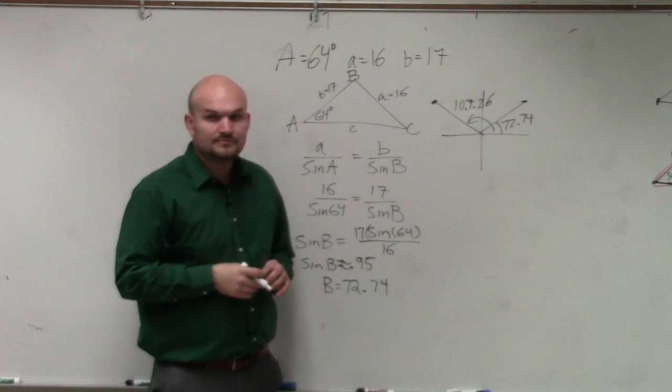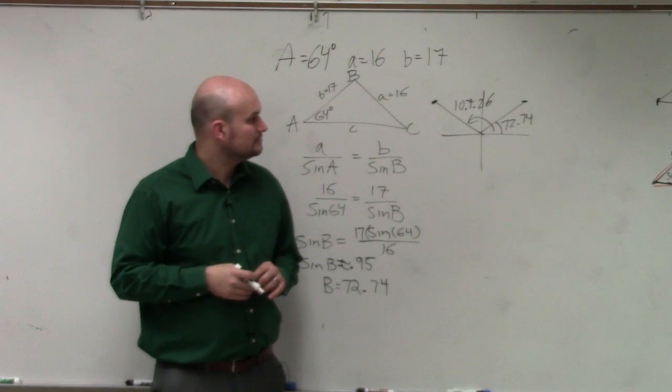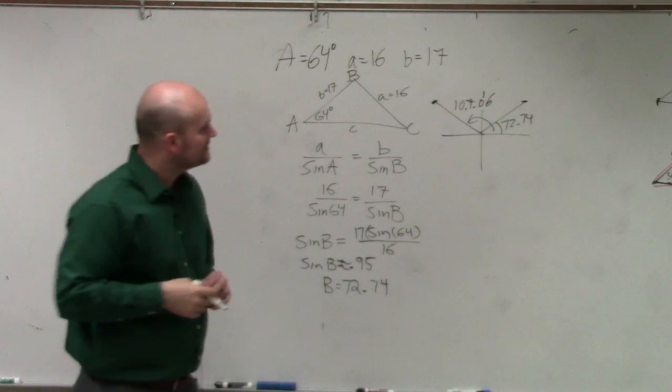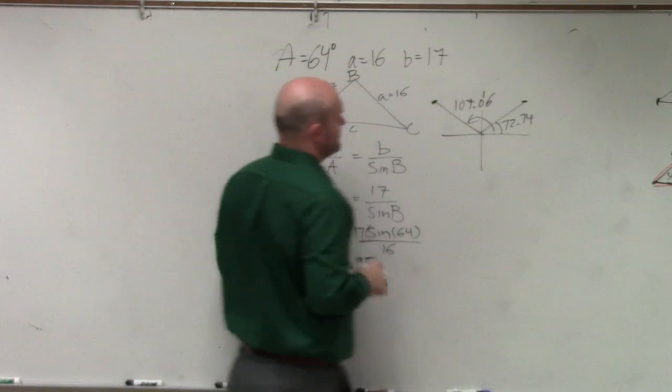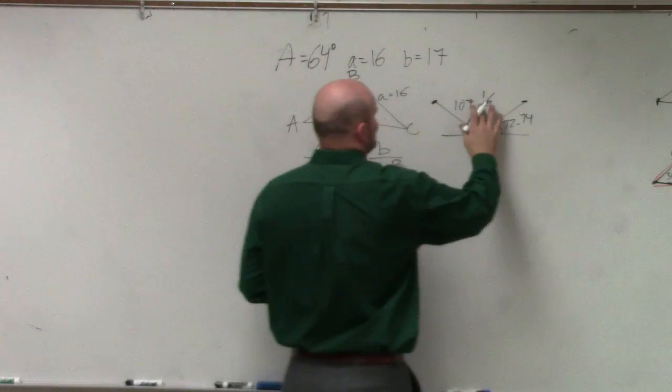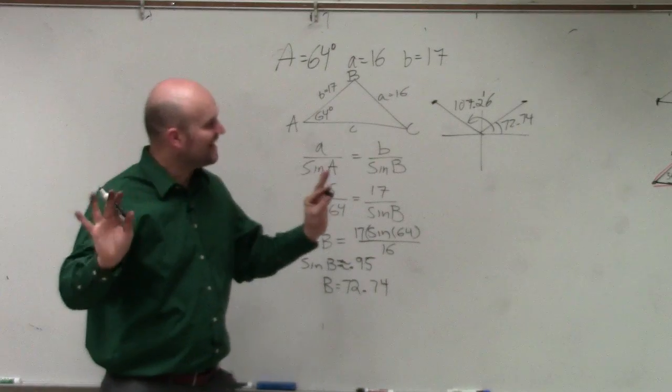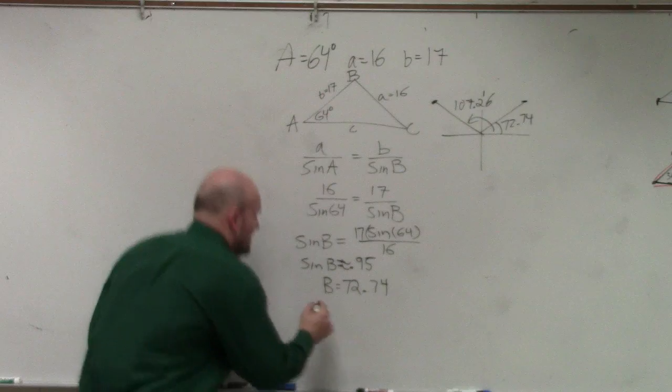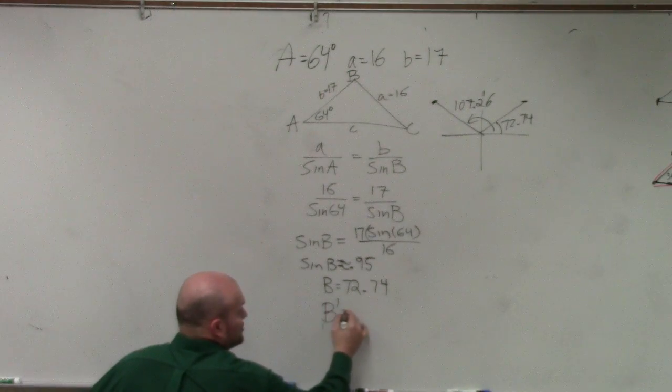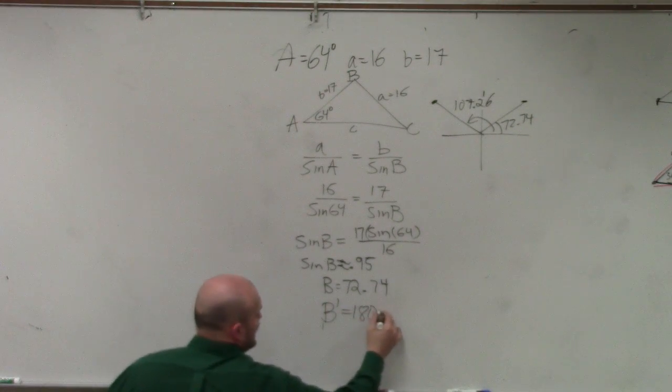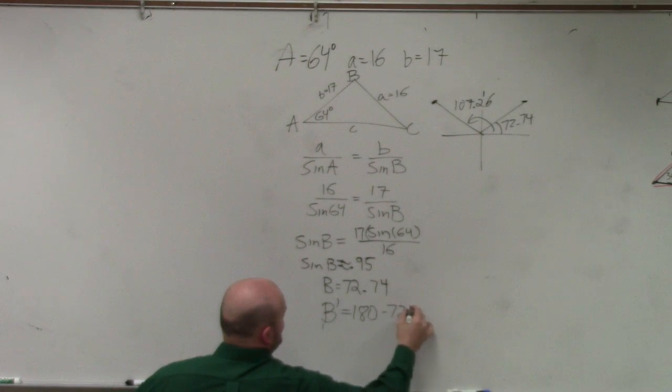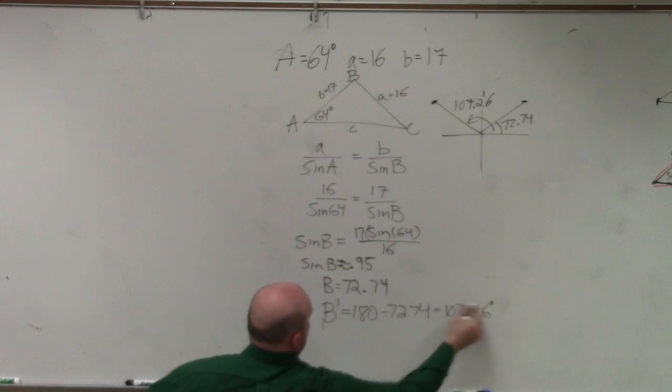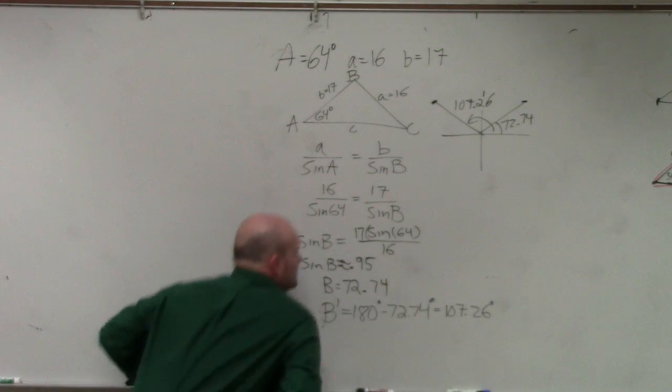Does everybody follow me? So that's case 1, b. And then we have b prime, which could be also another b, which is basically 180 minus 72.74, which equaled 107.26.